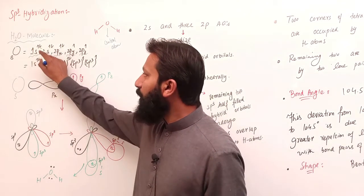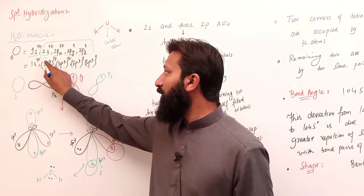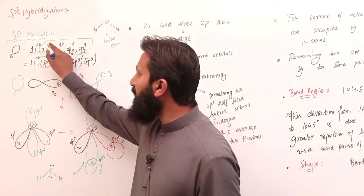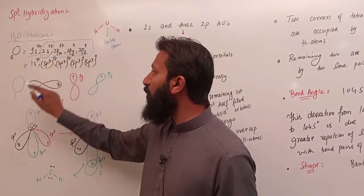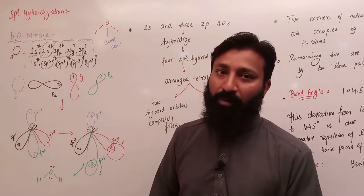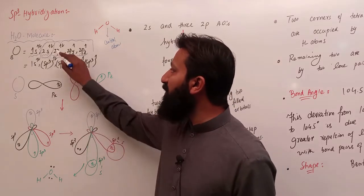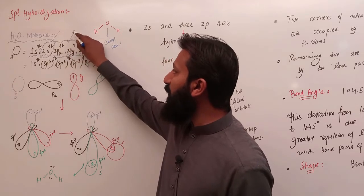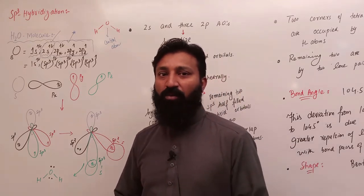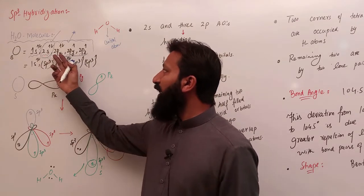अब यहाँ पर central atom oxygen के valence shell में यह जो 4 atomic orbitals मौजूद हैं — जिनमें से 1S atomic orbital है and 3P atomic orbitals हैं — these 4 atomic orbitals, जैसा कि मैंने definition में पहले भी पढ़ा था: the type of hybridization in which 1S and 3P atomic orbitals hybridize।